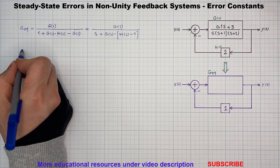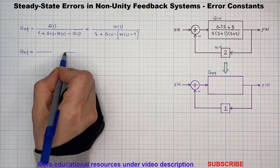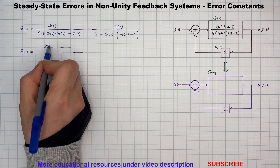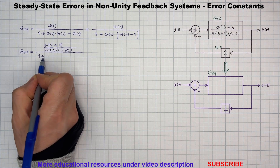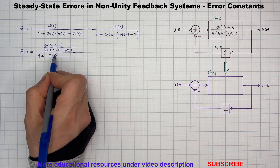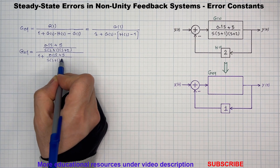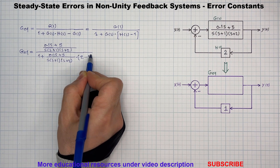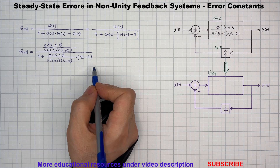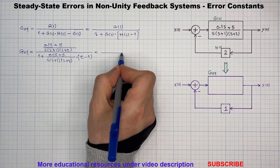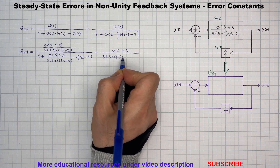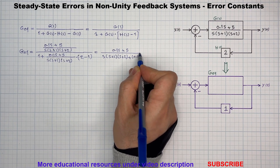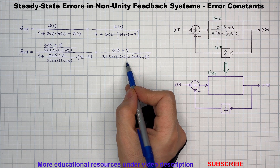Let's substitute the values in. Now we simplify both the numerator and the denominator. After multiplying the denominator and expanding it, we will get the equivalent transfer function of the forward path.